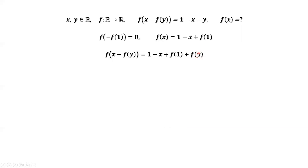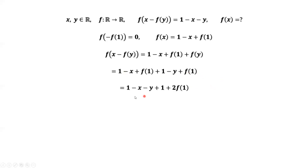What is f of y? We have a formula for f of x, so we only need to replace x by y on both sides. Therefore, we have 1 minus x; replace x by y gives 1 minus y, then plus f of 1. Simplifying this part, we have 1 minus x minus y plus 1 plus 2 f of 1. This is the second version for f of x minus f of y. The first version is the one that was given.